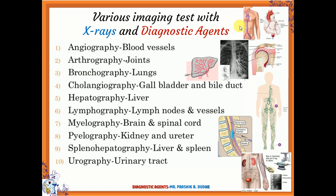The next technique is arthrography, which is specifically used in the case of joints. The radio opaque substance is injected into the joint — for example, the shoulder joint — and that part is subjected to x-ray. From the x-ray, we can create an image of the shoulder and identify where abnormalities are present. Arthrography is specifically used in the case of joint defects or if a patient has suffered from an accident and injured their joints.